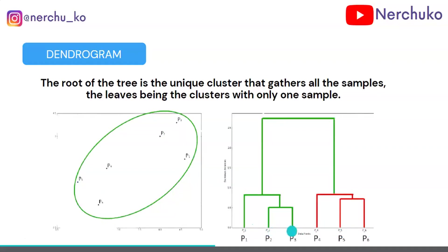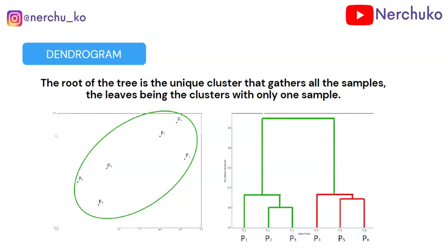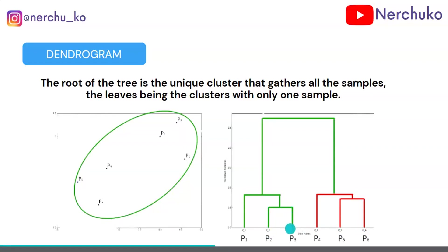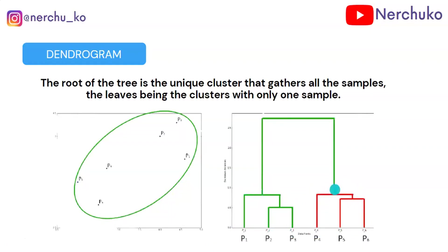Here we have points P1, P2, P3, P4, P5, P6 as single clusters. First, P2 and P3 are joined into one cluster. Then P5 and P6 are joined. Next, P1 is joined with the P2-P3 cluster. Then P4 is joined with the P5-P6 cluster. Now there are two clusters, which are finally joined together, forming the root of the tree.